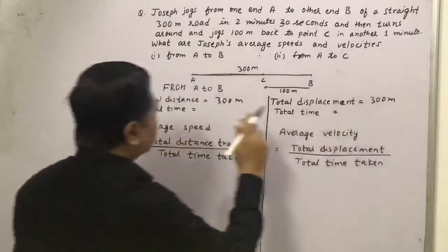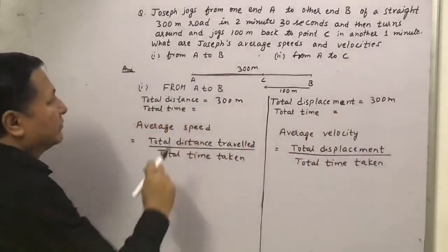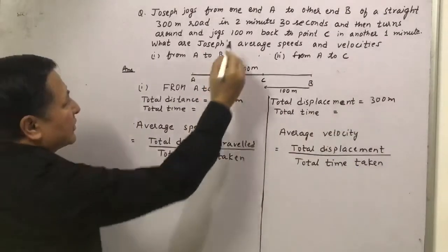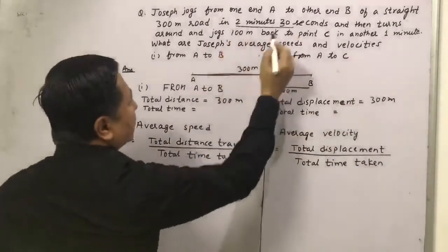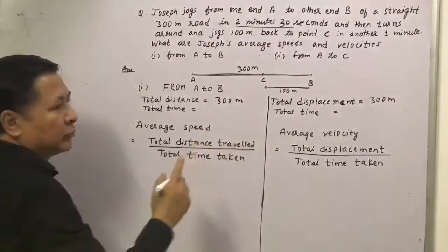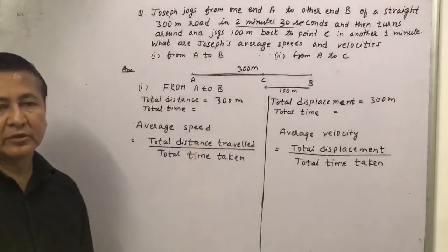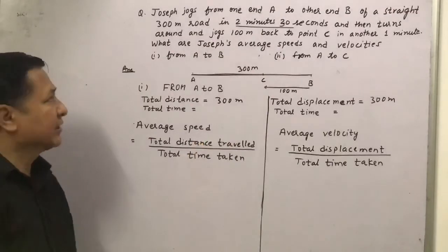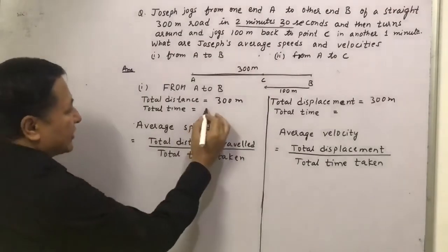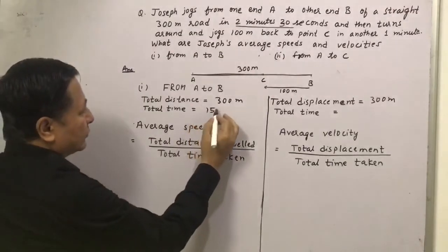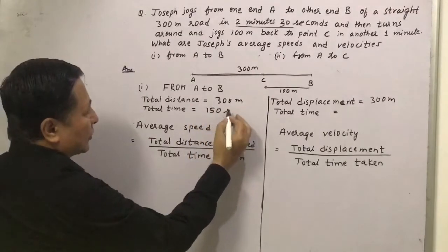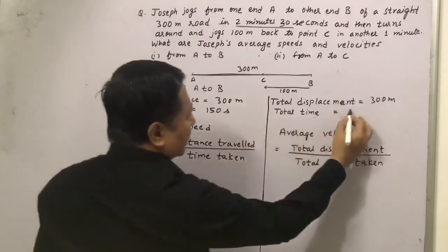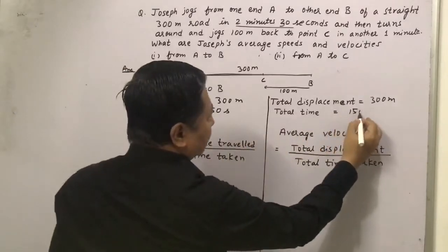The total time is given in the question: 2 minutes 30 seconds. 2 minutes is 120 seconds plus 30 seconds, that is 150 seconds. So the total time is 150 seconds.